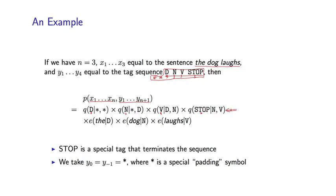So those are the q parameters. And then in the second part of this expression, I have a product of e parameters, one for each word in the input sentence. So I have e of the given D, that's for this word here. E of dog given N, that's for this word here. And finally, e of laughs given V, for this word here. And intuitively, these parameters correspond to the probabilities of first generating the word the from the D, then generating the word dog given the underlying tag is N, and finally, generating the word laughs given the underlying tag is V.